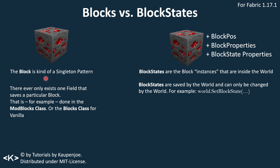First of all, what is the difference between a block and a block state? The block can be thought of as a singleton — there is only ever one instance. When you create a block in our ModBlocks class, that is the only time we actually create that block. You can create multiple blocks of the same class, but that field stays the same. It's always a final field, and for vanilla this is done in the Blocks class.